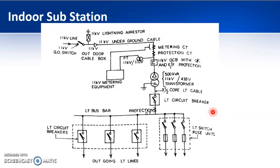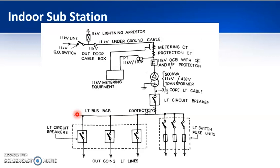Depending upon the capacity of your transformer and also the load connected, you may be using different kinds of circuit breakers. For higher ratings you will use an oil circuit breaker and you will also have a protection CT to trip this circuit breaker in case of any kind of fault. From there it goes to an LT bus bar — a long-shaped conductor, rectangular in shape. From there you are taking your supply to sub circuits.